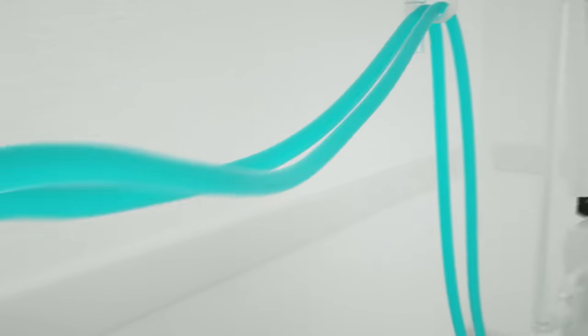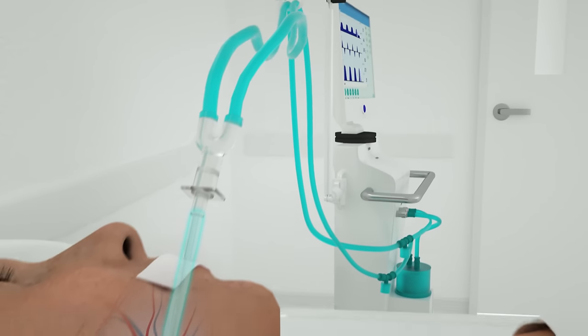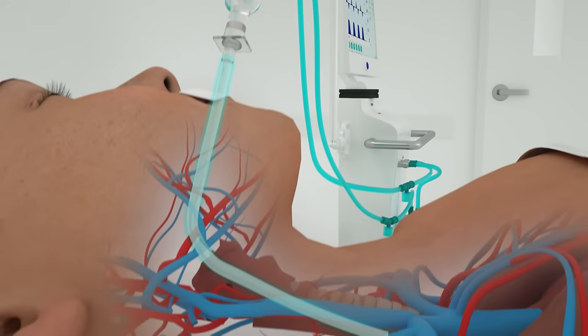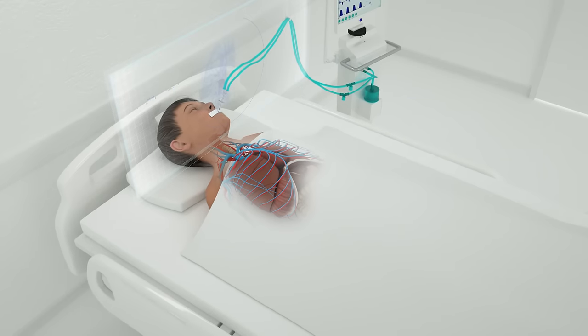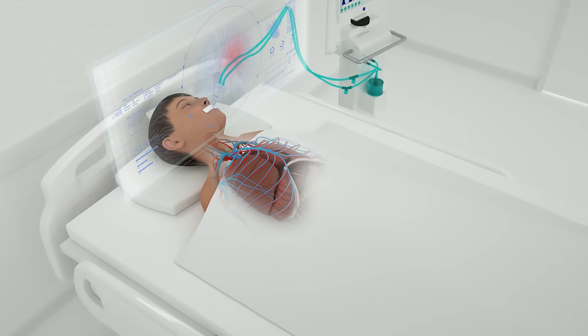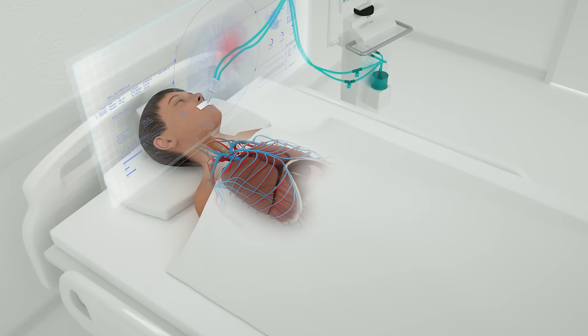Ventilators oxygenate the body by forcing air into the lungs through a tube inserted into the trachea. As the ventilator pumps air into the body, the lungs inflate to mimic the process of breathing.